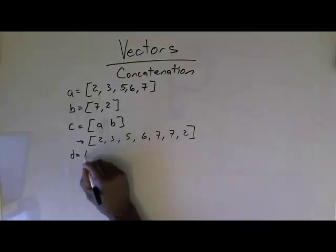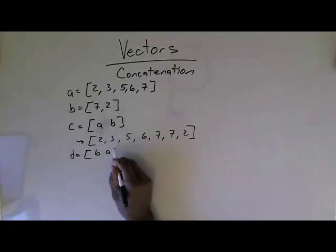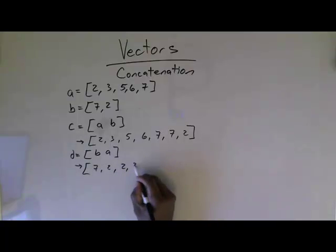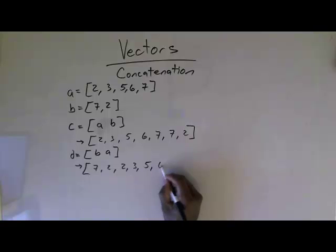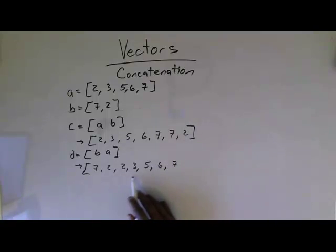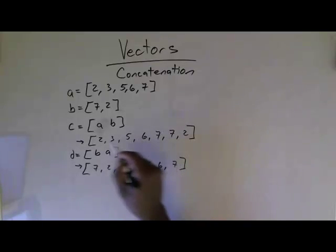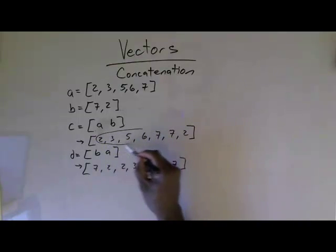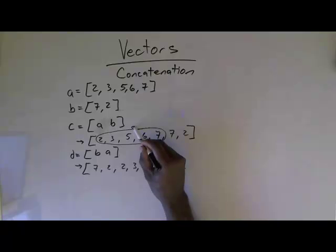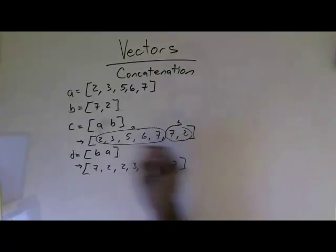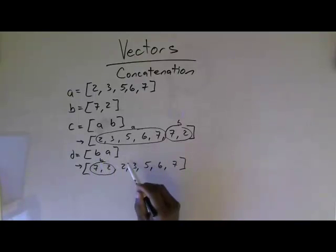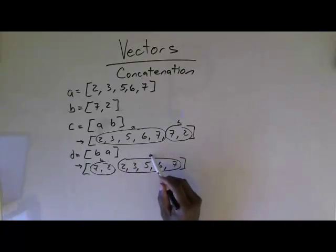If I did vector D equals B, A, then I get 7, 2, 2, 3, 5, 6, 7. So up here in this one, I stuck A and B together. These are the elements contributed by A. These are the elements contributed by B. Now it's all one big happy vector. I'll change the order here. These are now the elements contributed by B, and these are the elements contributed by A. One big happy vector.